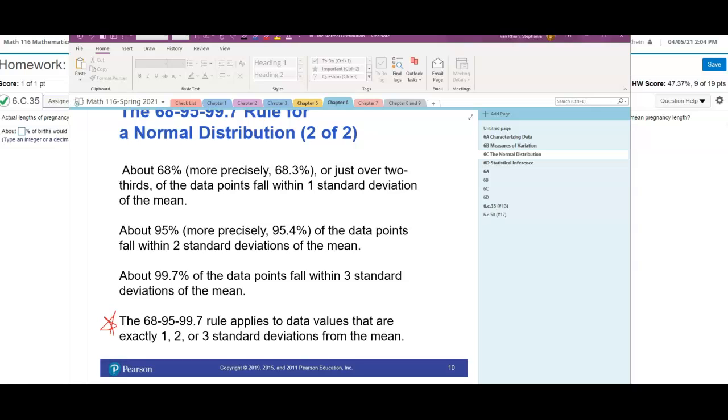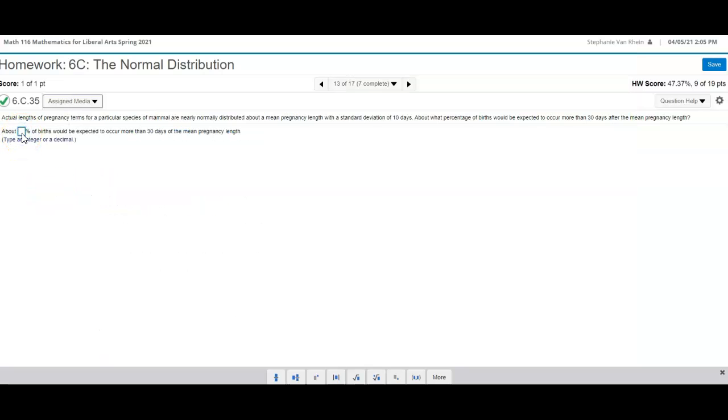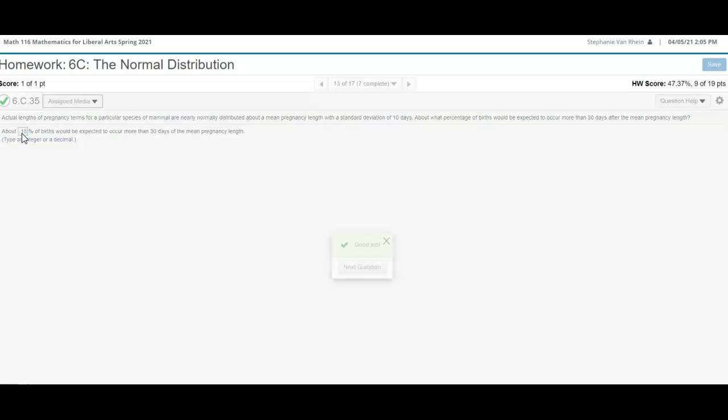So you take your calculator, 100 minus 99.7. So 0.3% of the time, it falls outside of those 3 standard deviations. However, you have to be careful because divided by 2, since it's symmetric, half of them would be before 30 days before the mean, and half of those would be 30 days after the mean. So you're really looking at 0.15 here. So it's 0.15%, right?